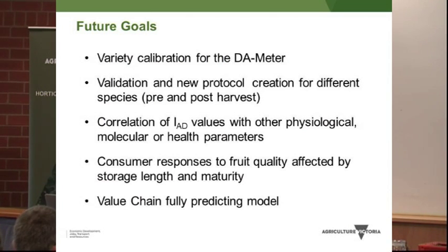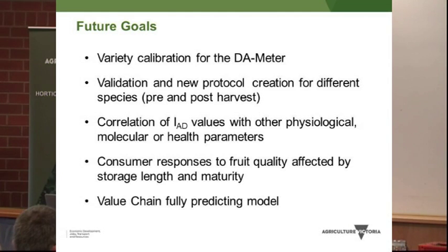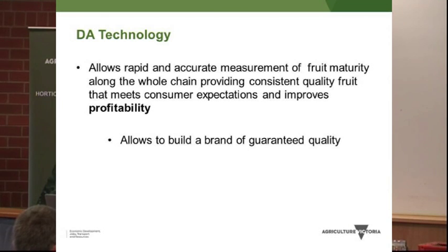We also aim to better understand the correlation between DA values and other physiological parameters, and possibly even health compounds. Attaching value to consumer responses is one of the important parts. We need fully predictable chain models. In conclusion, this technology allows for rapid and accurate measurement of fruit maturity along the entire chain, providing consistent quality, which increases profitability and — especially for export — would allow for branding if you are able to guarantee it.